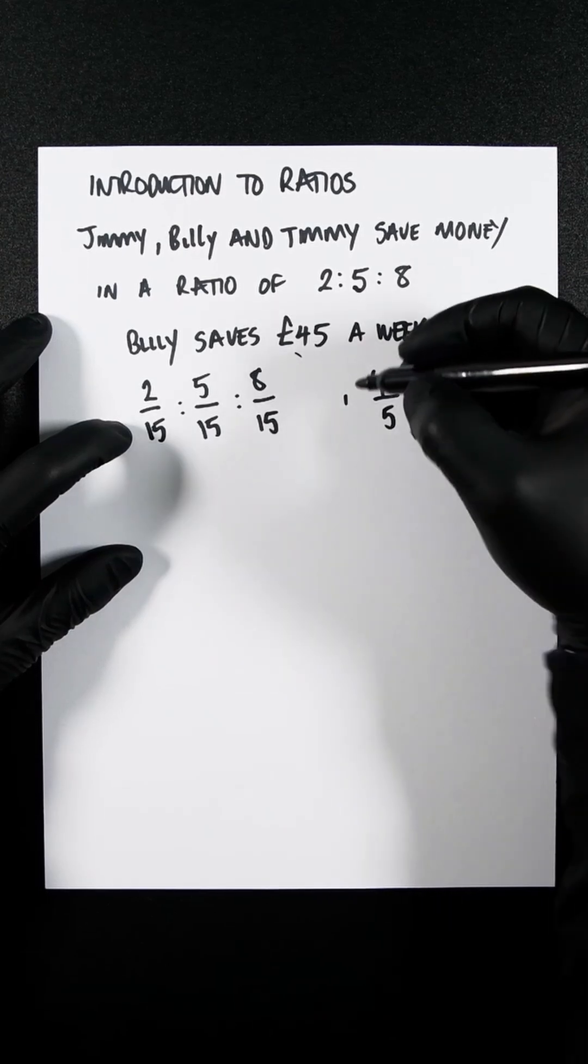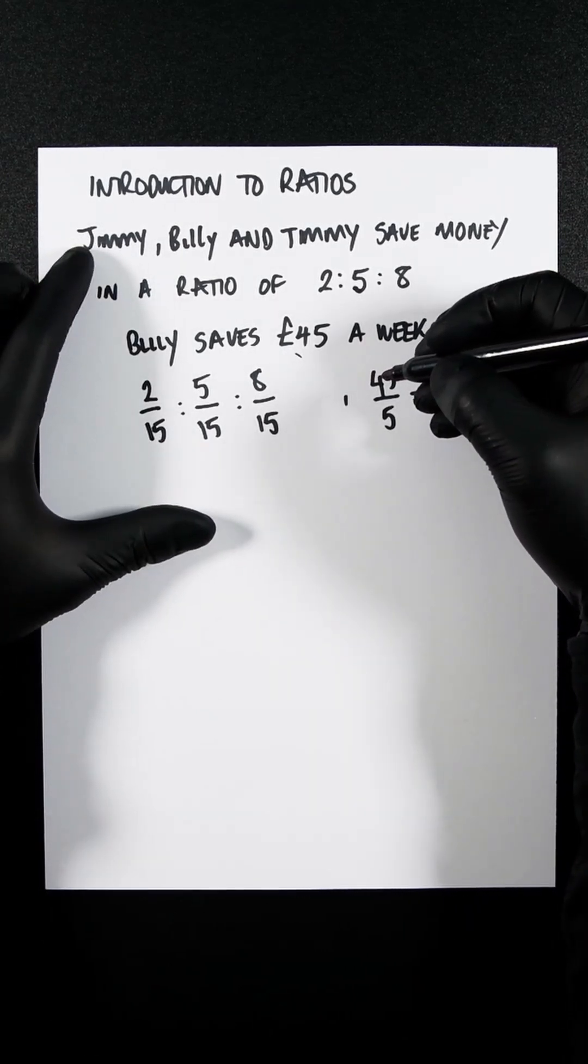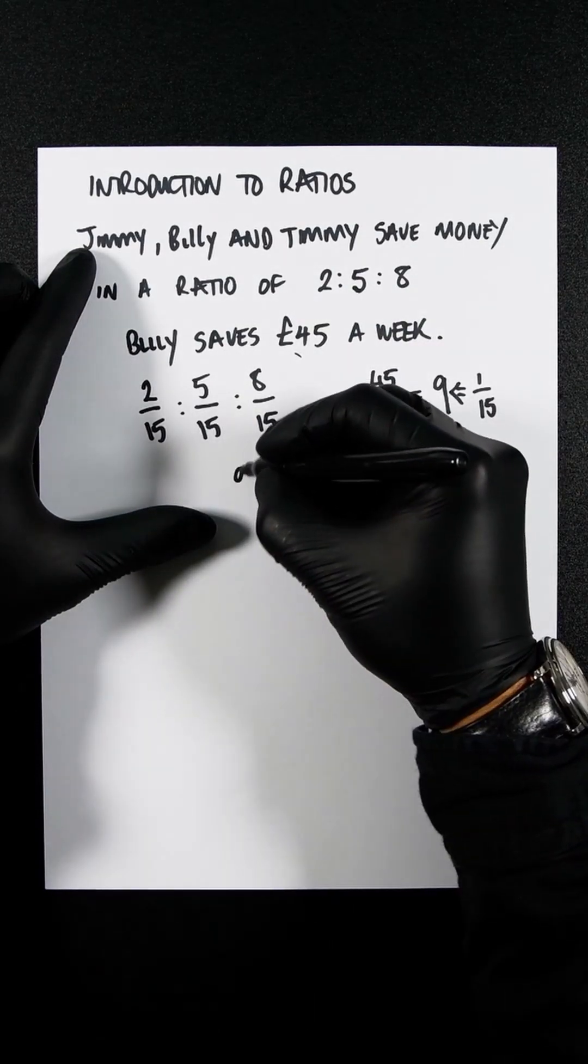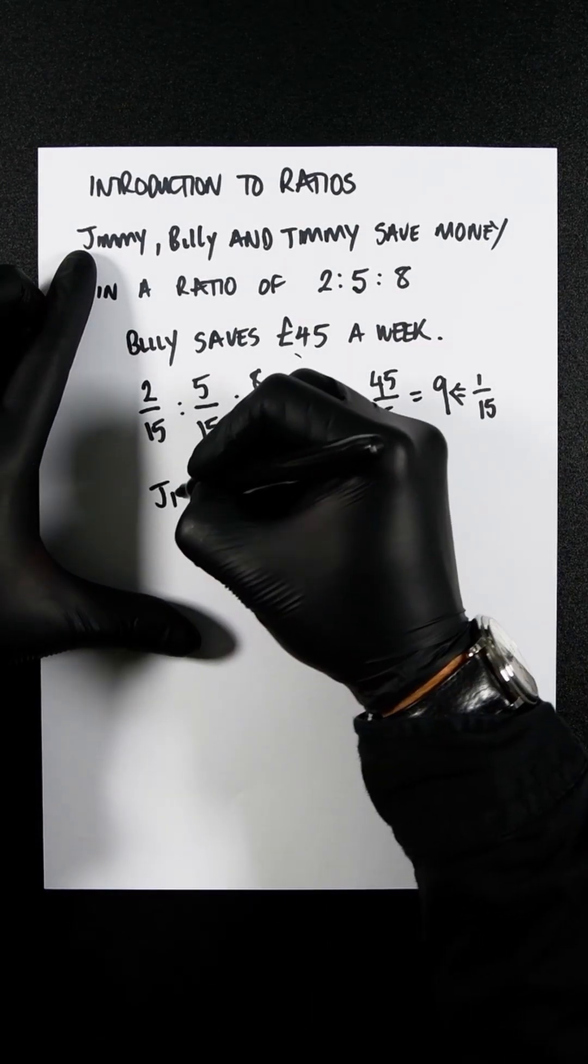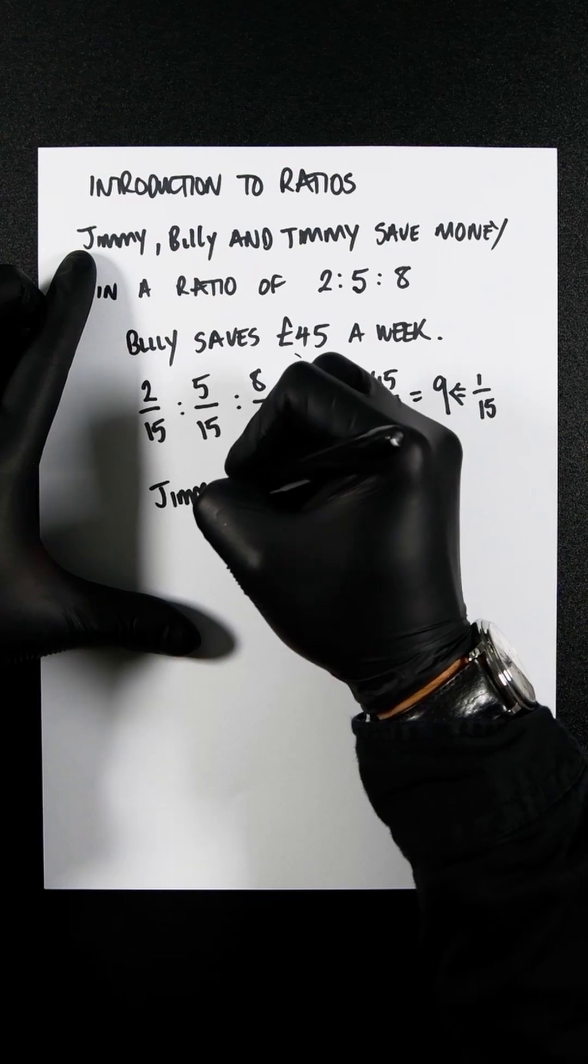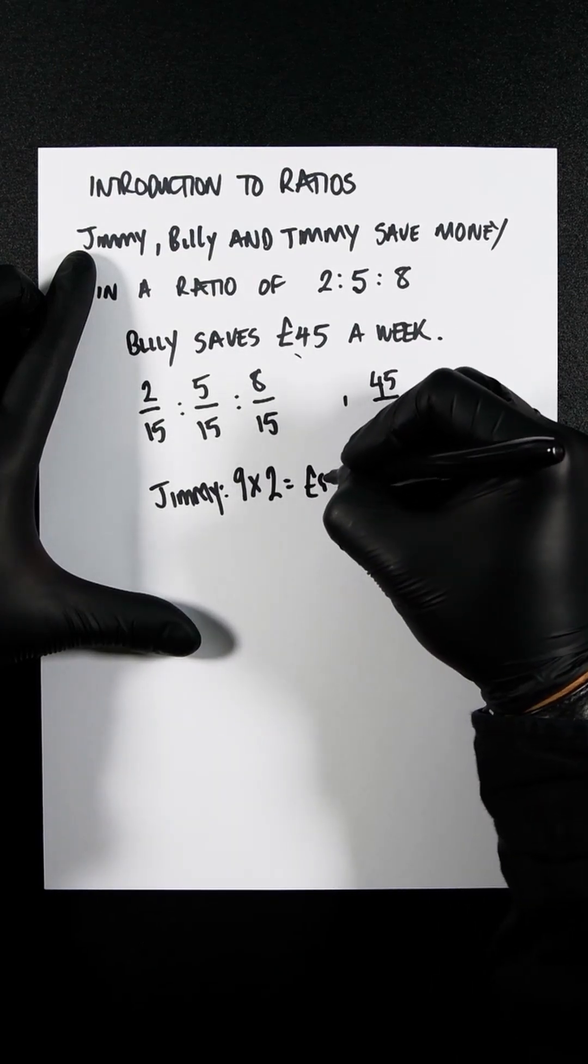So all you would then do is take what Jimmy's amount is, which is 2, and you would do 9 times 2, which is 18 pounds.